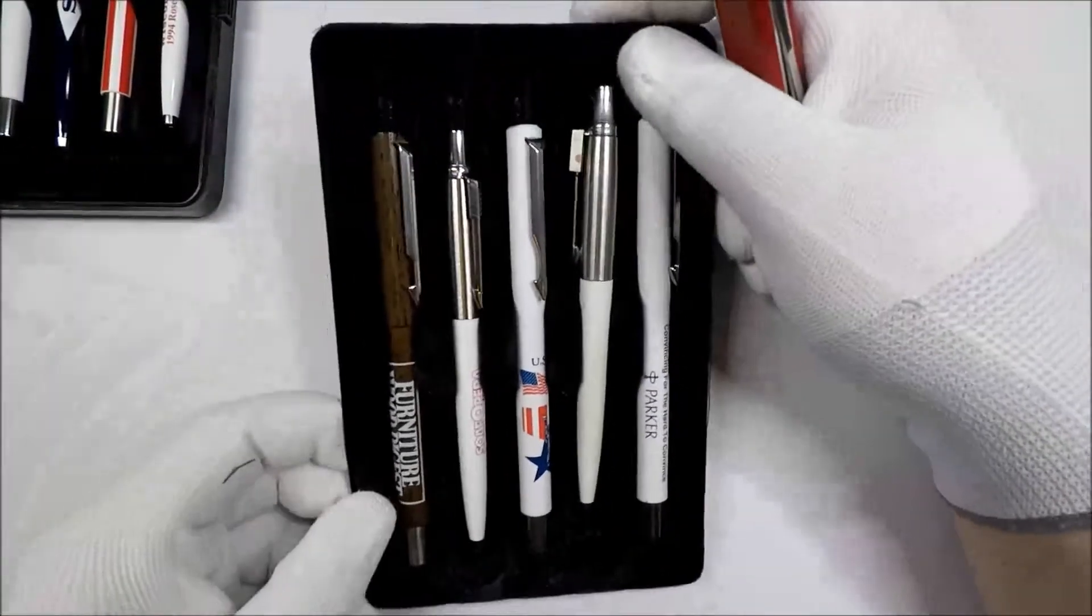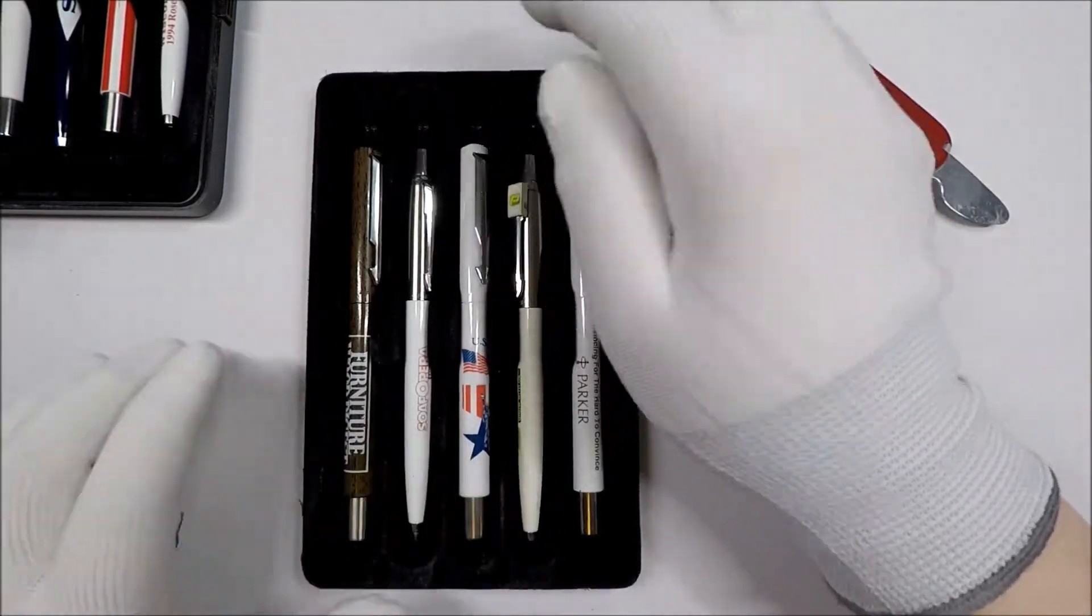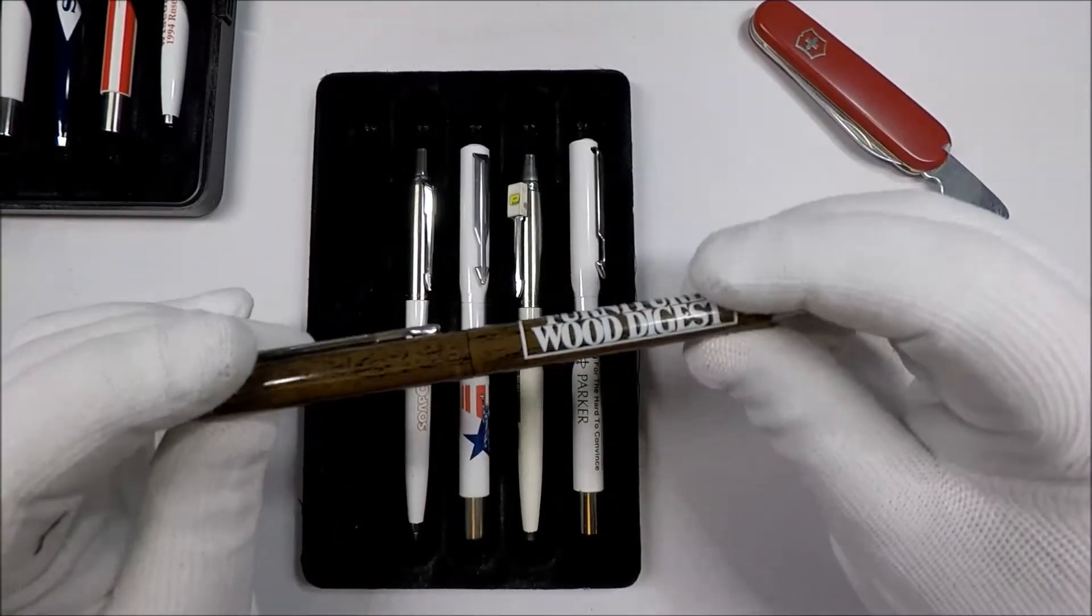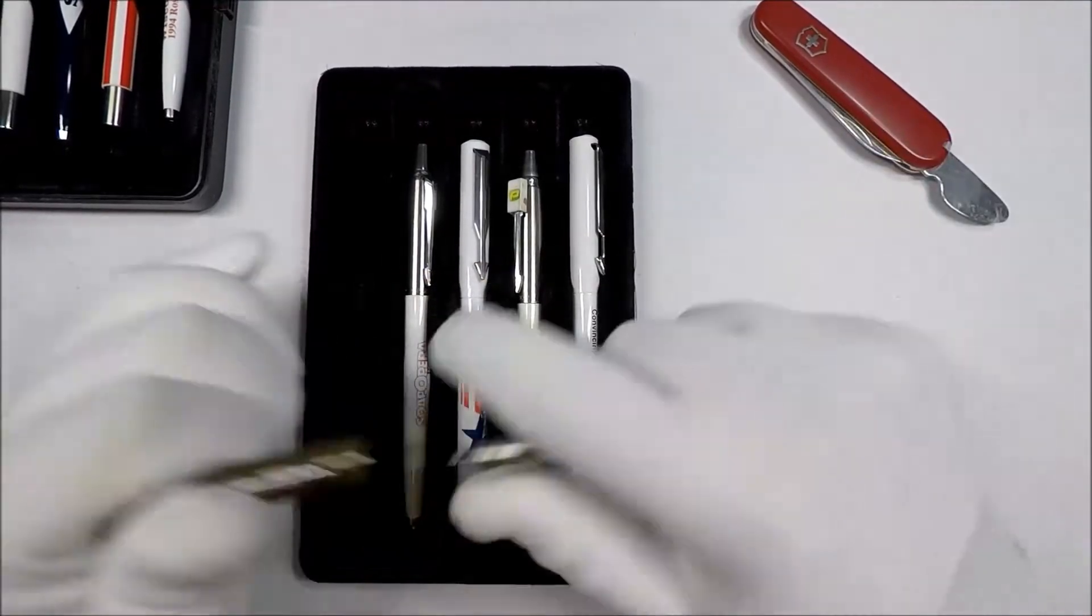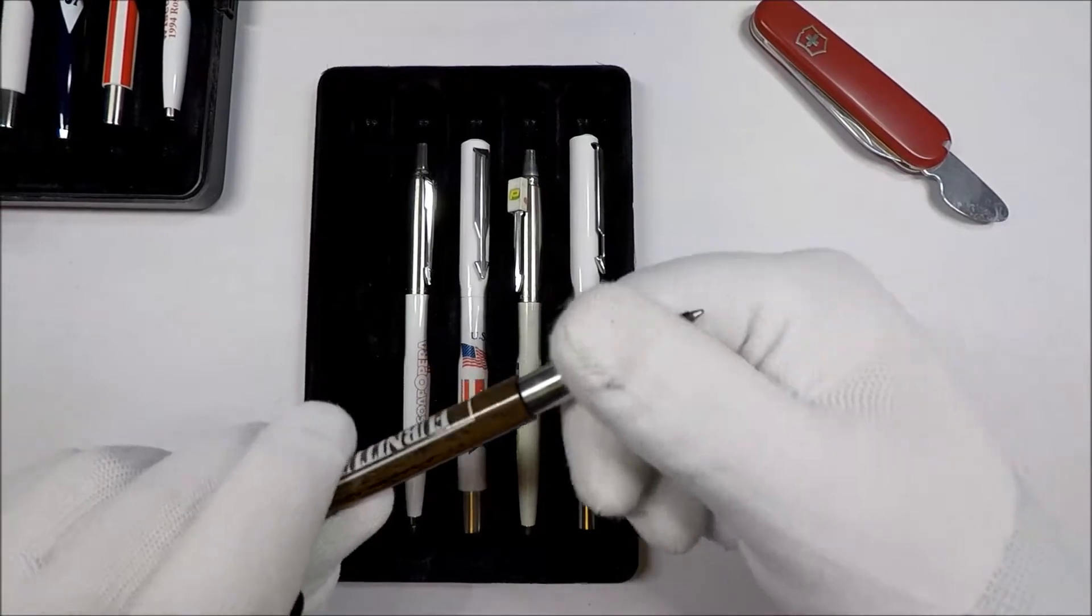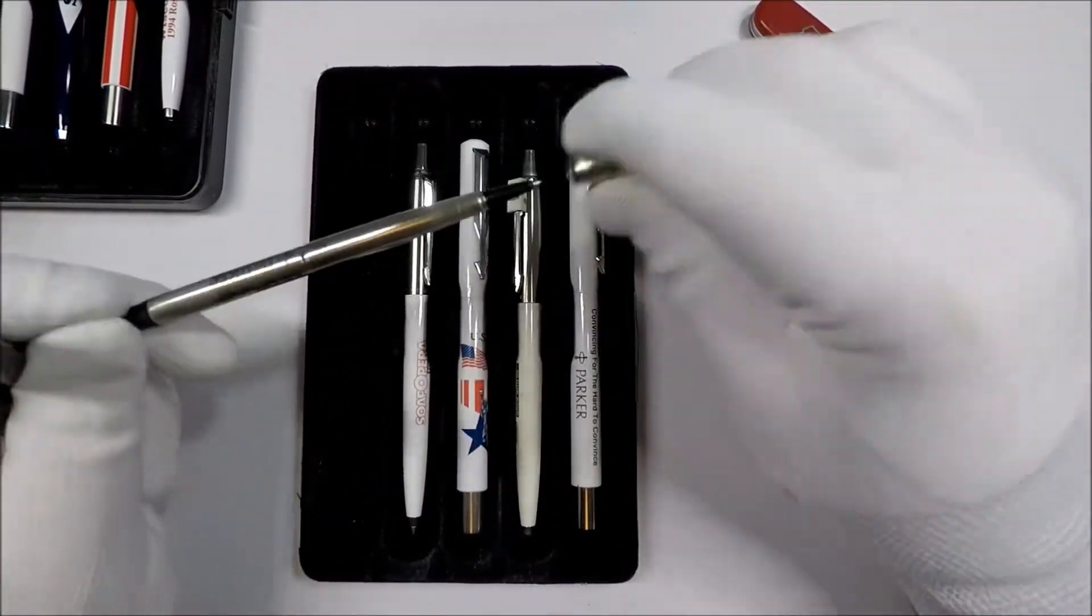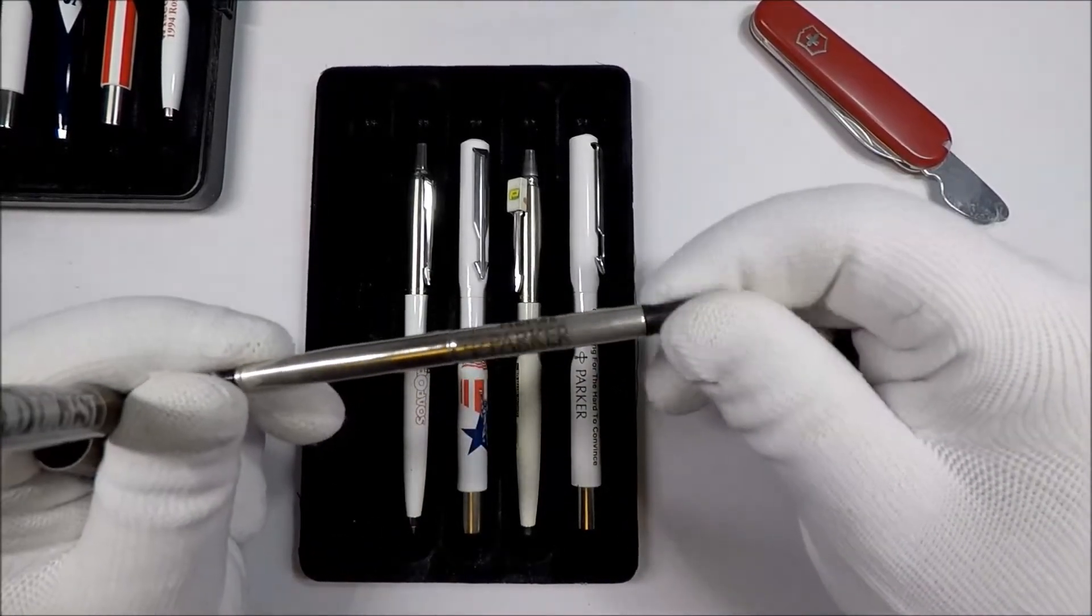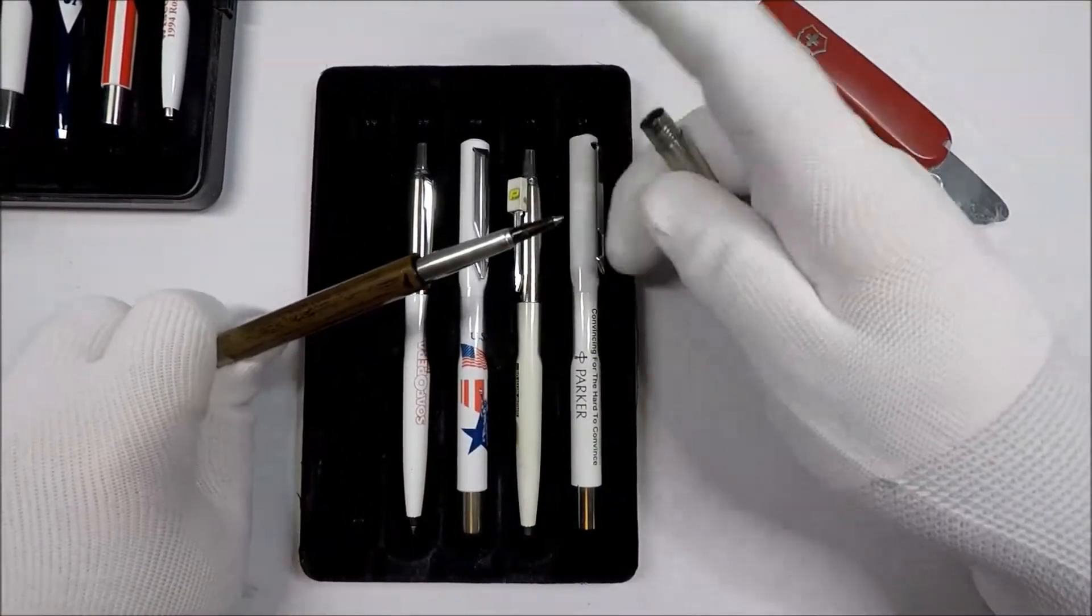These are Parker Jotters and Parker Vectors. Kind of a neat looking one. It's got a wood grain, varnished wood digest. And it just looks like a standard Parker Vector. Looks like just the usual. Kind of neat.